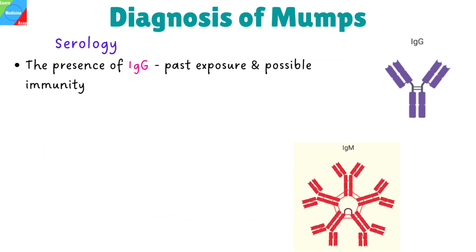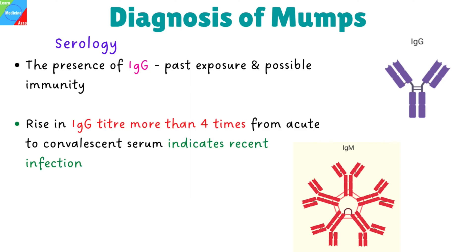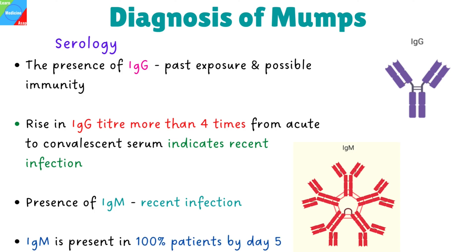Serology: serum IgG and IgM are measured as early as possible and after 10 to 14 days of illness. Presence of IgG indicates past exposure and possible immunity. However, a rise in IgG titer more than four times from acute to convalescent serum indicates recent infection. Similarly, presence of IgM also indicates recent infection. IgM is present in 100% of patients by day 5.